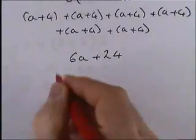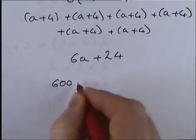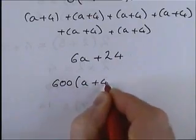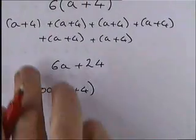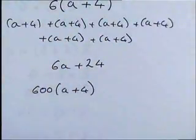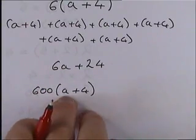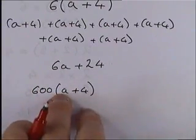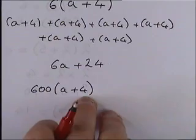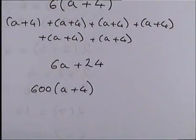But, if I then wrote the question down 600 lots of a plus 4, well, you can tell me quite quickly that I'd have to write this bracket out 600 times. And that would be a silly way of doing it and a long way of doing it. When all we need to do is realize that there's 600 of those a's and 600 of those 4's. Okay? And we can expand the bracket that way.